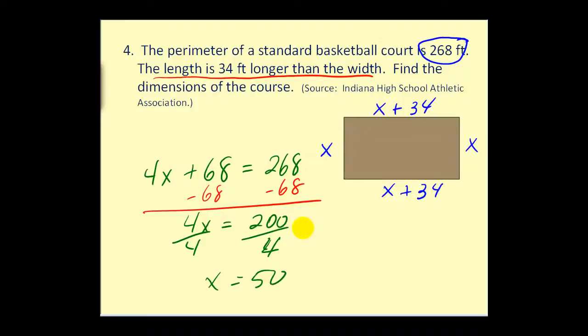Now again, we need to make sure we answer the question. The question is find the dimensions of the court. The width is equal to x. Well, x is 50. So the dimensions would be 50 feet by, and the length is x plus 34. 50 plus 34 would be 84. So the dimensions of the basketball court would be 50 feet by 84 feet.